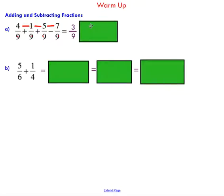You'll see that I get 3 over 9. It's always good practice to reduce your fractions to lowest terms. I can divide the top and bottom by 3 and end up with 1 third.